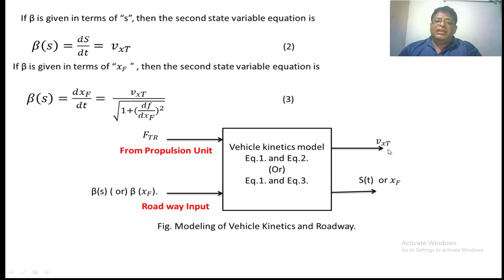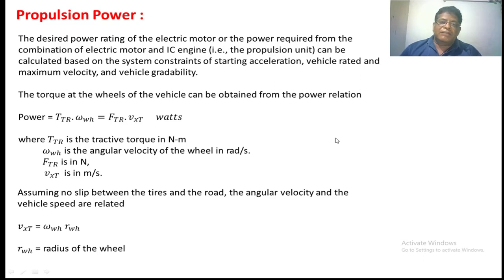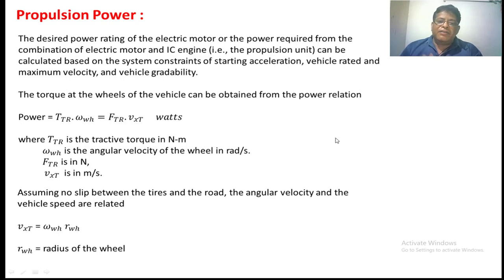Next, the propulsion power. Propulsion power is the power given by the propulsion unit to move the vehicle on any type of road — that may be a flat road or a hilly road. Generally, this propulsion power is given by the motor in case of EVs, and in hybrid electric vehicles, it is given by the combination of motor as well as the IC engine.